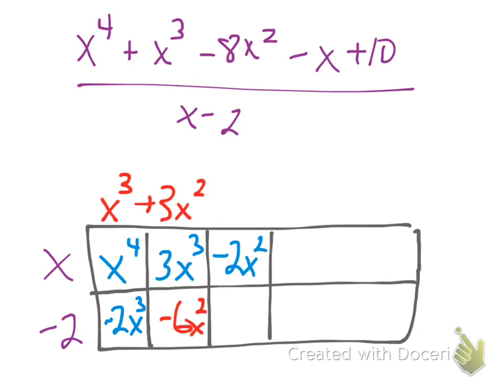Continuing on, what goes up here times x is going to give me a negative 2x squared. It will be a minus 2x. Multiplying now to figure out this box here is going to be a positive 4x.